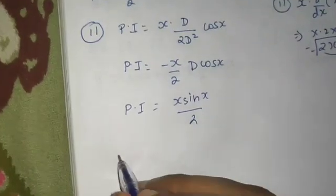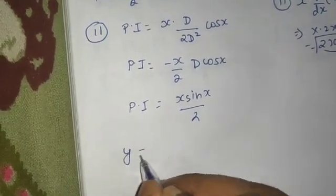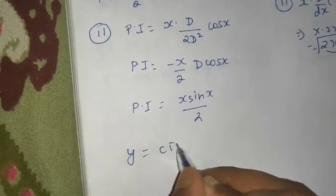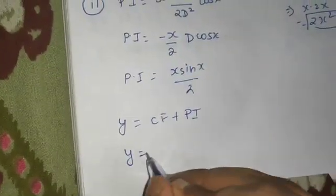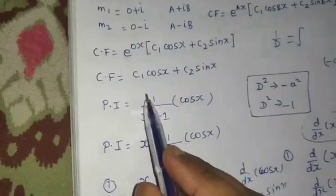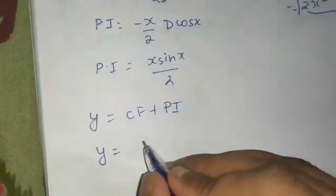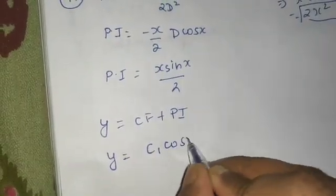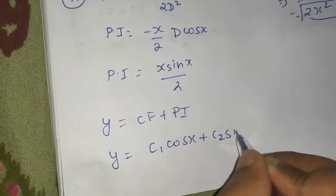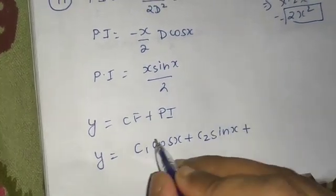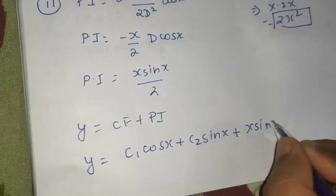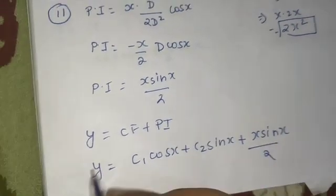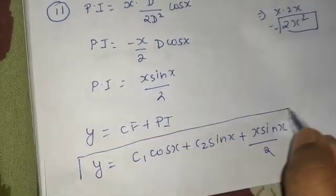Just choose either method. The final step is y equals CF plus PI. The complementary function is c1 cos(x) plus c2 sin(x), and the particular integral is x sin(x) / 2. So this is your final solution.